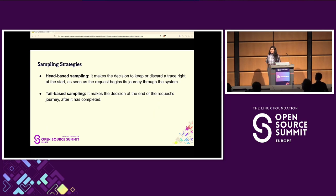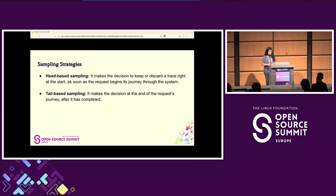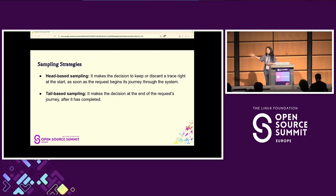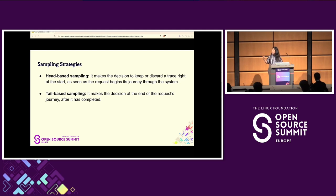There are no free lunches, so in tracing too, you're supposed to sample your spans — only a handful of the data tracing generates will be available to you. Sampling can be done in two ways. Head-based sampling takes the decision to keep or discard a trace right at the beginning of a request journey — it's like a lottery system where you might miss important traces. Tail-based sampling takes the decision at the end of the request journey, giving you more information and feedback to act on. You can use algorithms to decide what spans you need. Most people opt for tail-based sampling once they realize the benefits.